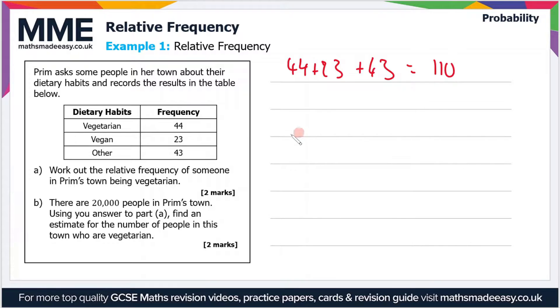Then next we want to work out the relative frequency, in other words the probability that someone's vegetarian. So out of the total, there are 44 that are vegetarian, so therefore the probability is 44 out of 110. Now we can cancel that down, and if you cancel it to the most simple form, it becomes two-fifths.